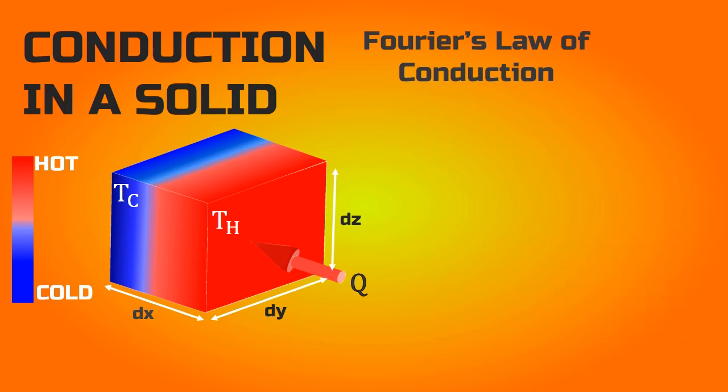Fourier's law states that the rate of heat transfer through a material is proportional to the temperature gradient and the area normal to the direction of heat flow, where the proportionality constant k is the thermal conductivity.